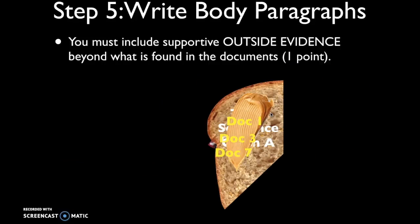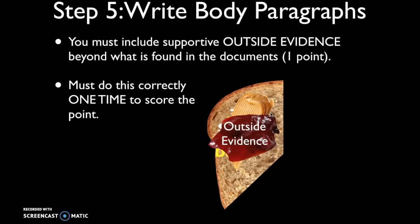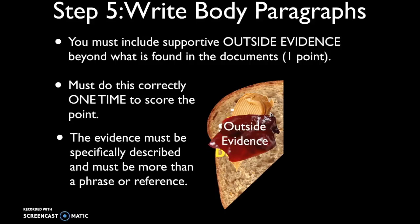The next step is to add outside evidence — some relevant evidence beyond what is found in the documents. This is worth one point, and you can seamlessly weave it into your body paragraphs. It doesn't matter exactly where you do this, but you must do it correctly one time to score the point. The evidence must be specifically described — you won't get a point for mentioning just a word or two. It has to be a specific description of outside evidence.